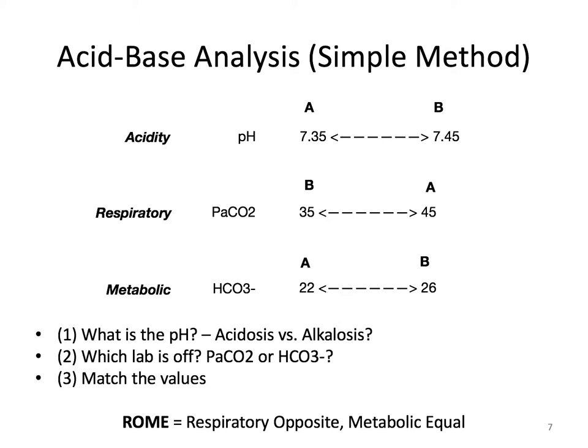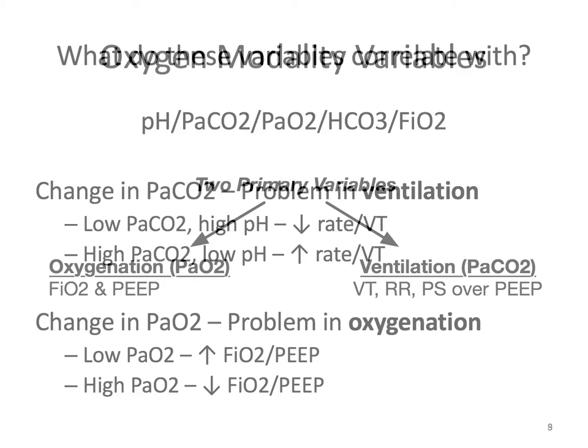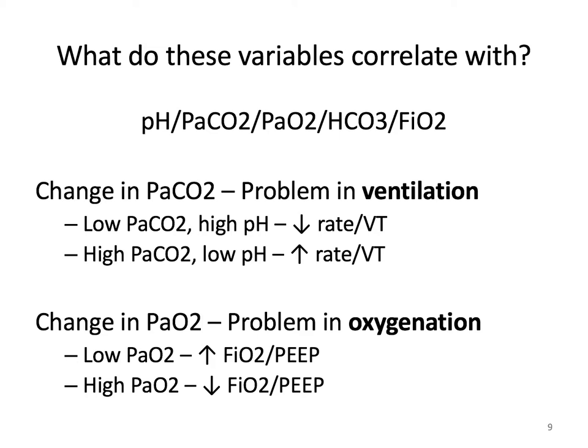We are primarily concerned with the PaCO2 and PaO2 in mechanical ventilation. These values illuminate two important concepts within lung mechanics — ventilation and oxygenation — and I've included the mechanical ventilation variables that correspond with each. If there's a change in PaCO2, there's a problem in ventilation. With a low PaCO2 and a high pH, you would decrease the rate or the tidal volume. With a high PaCO2 and a low pH, you would increase the rate or the tidal volume. A change in PaO2 indicates a problem in oxygenation — with a low PaO2, you would increase FiO2 or PEEP, and with a high PaO2, you would decrease FiO2 or PEEP.